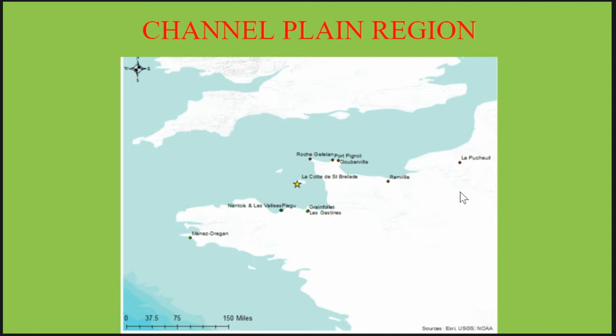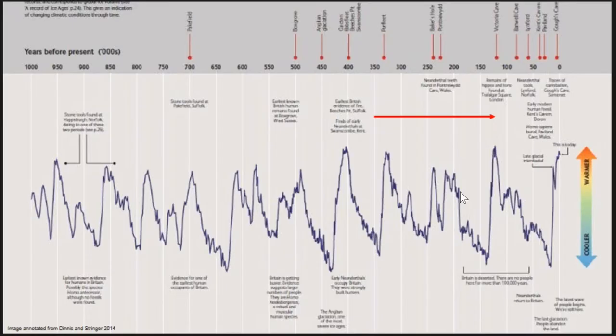As a quick landscape perspective, La Cotte is sat in the middle where the star is, just to show that it's within a landscape of Neanderthal activity. This is a landscape I've defined myself, so don't consider it a fixed Neanderthal preference zone — it's just a way of constraining my analysis. For the early Middle Palaeolithic specifically, this is just a simple MIS curve.